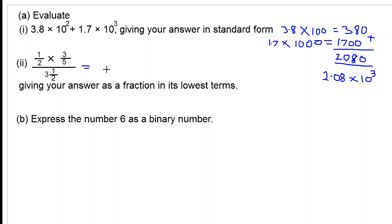Let's do part 2. We work out the sum giving our answer as a fraction in its lowest terms. So let's work out the numerator: 1/2 times 3/5. 1 times 3 is 3. 2 times 5 is 10.